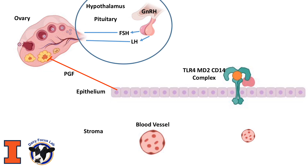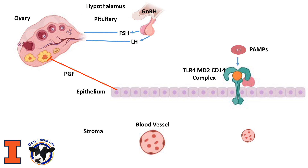At the top we have the pituitary, which by the release of GnRH from the hypothalamus will release FSH — the follicular stimulant hormone — and LH, the luteinizing hormone, and both of them will act in the ovaries. But when there is an infection in the uterus, the innate immune response is alerted by the toll-like receptor, which detects the bacterial DNA in lipids, or LPS, such as this one here.